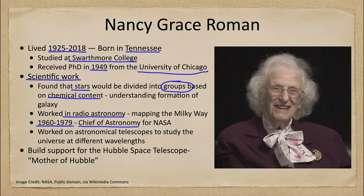She worked on getting telescopes up that observed in the x-rays, in the infrared, and in the ultraviolet, to be able to look at the universe at all these different wavelengths. When we look at things in different wavelengths, we get a different picture, because different wavelengths of electromagnetic energy — from gamma rays on the high energy side to radio waves on the low energy side — tell us about different parts of an astronomical object.